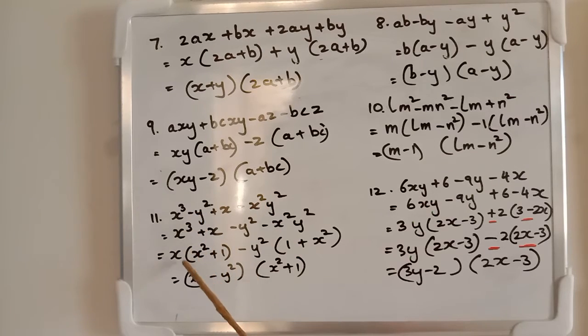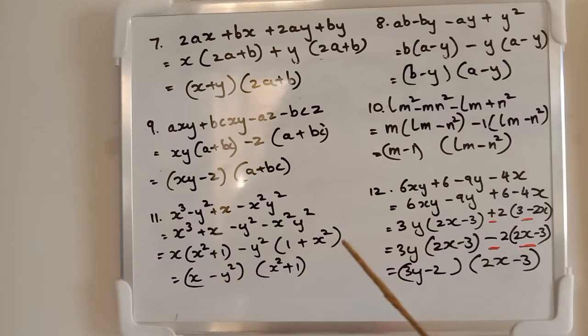What do we get there? x(x² + 1). And here, y² we keep here next to x²y². -y² - x²y². Take out -y² outside, and we get (1 + x²) inside. What is this x² + 1? Same thing as 1 + x².